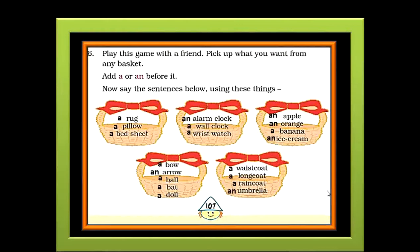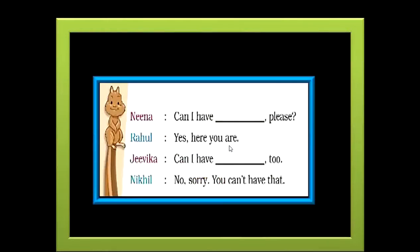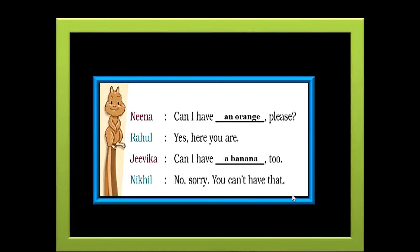Now children, using any of these words you need to complete this conversation. Here it is the conversation between Nena, Rahul, Jeevika and Nikhil. Can I have an orange please? Rahul says, Yes, here you are. Jeevika, can I have a banana too? Nikhil says, No, sorry, you can't have that.